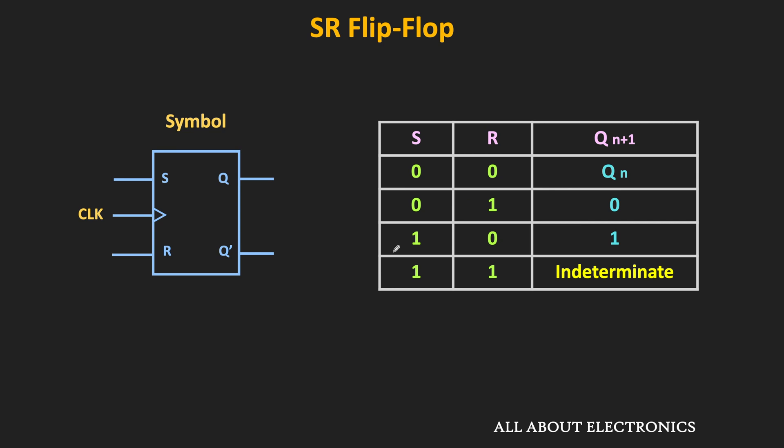In the previous video, we learned about the SR flip-flop. We have seen that when both its inputs are 1, then it is difficult to predict the output of this flip-flop, and that is why it is not suitable for many sequential circuits. This issue can be resolved using other flip-flops like the D flip-flop or the JK flip-flop.